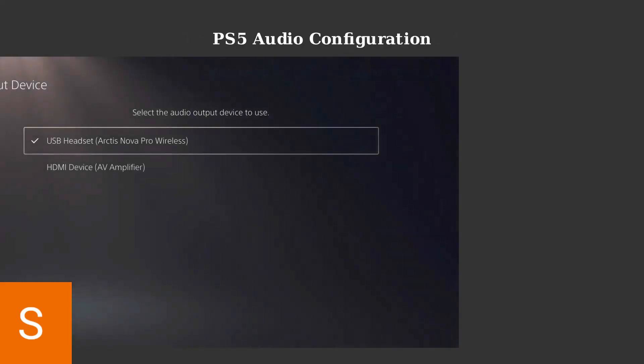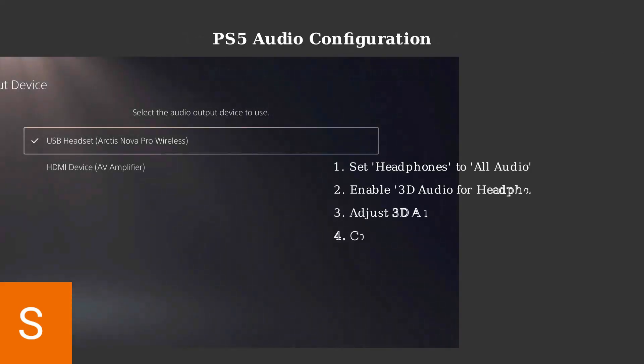To optimize your audio experience, navigate to Settings, then Sound, then Audio Output in your PS5 menu. Here you'll configure several critical settings for the best performance with your Cloud 3 headset.